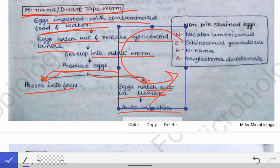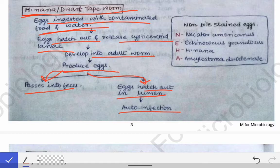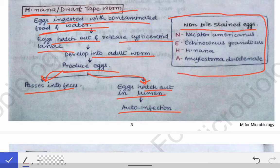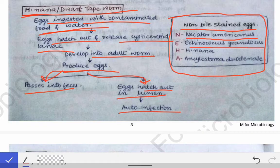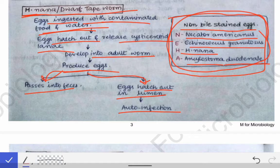An important point examiners sometimes ask is: which eggs are non-bile stained? Remember the mnemonic NEHA — N for Necator americanus, E for Echinococcus granulosus, H for Hymenolepis nana, and A for Ankylostoma duodenale. The eggs of these four organisms are non-bile stained.